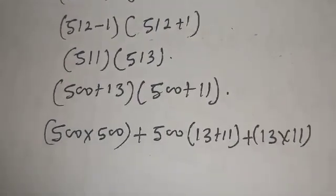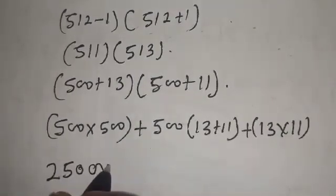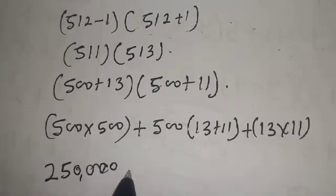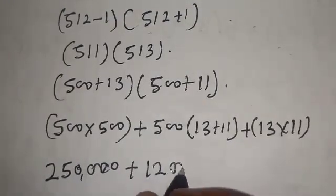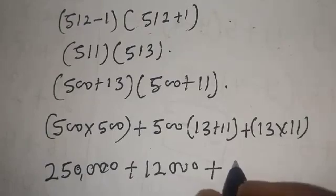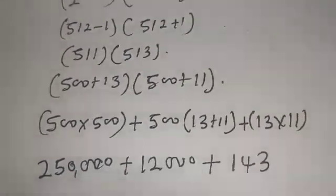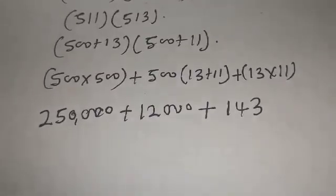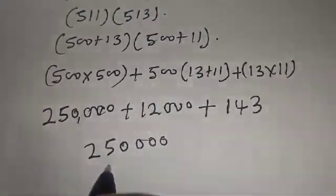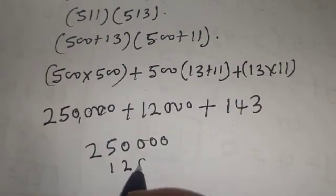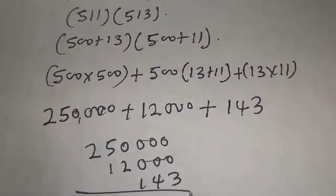Now 500 times 500 is 250,000, plus if you open this bracket we have 12,000 plus 143. Let's add everything together. Now we have 250,000 plus 12,000 plus 143.